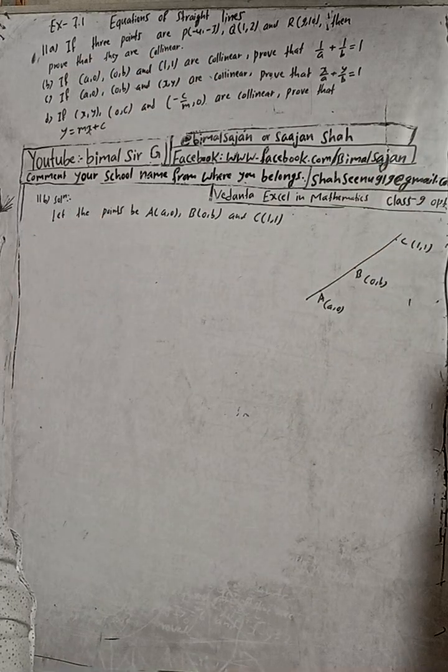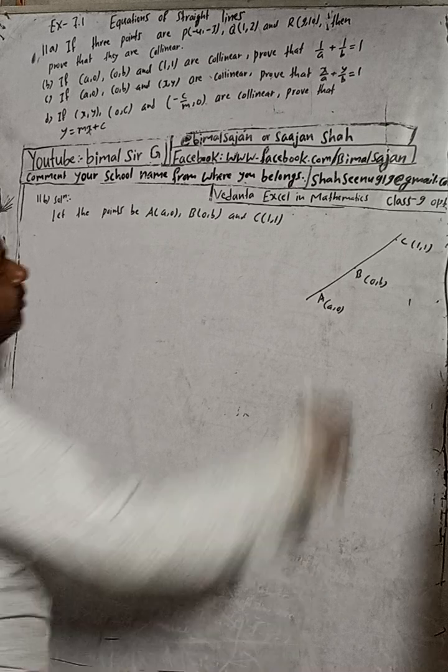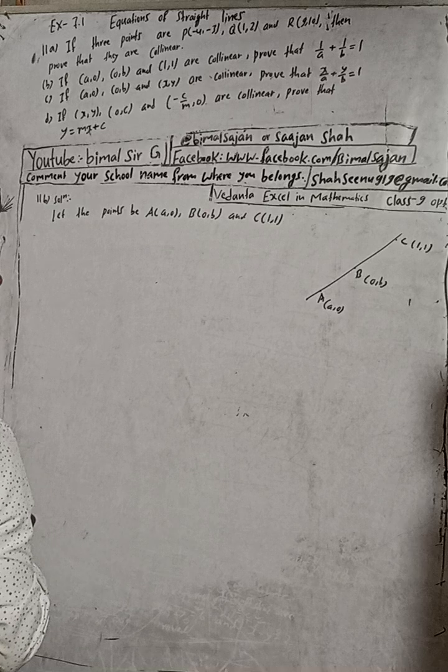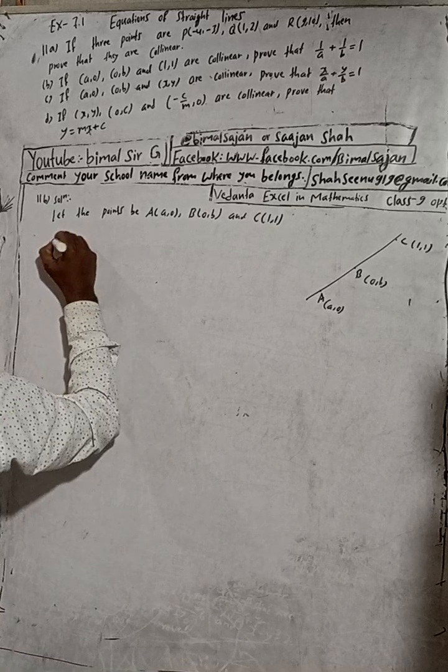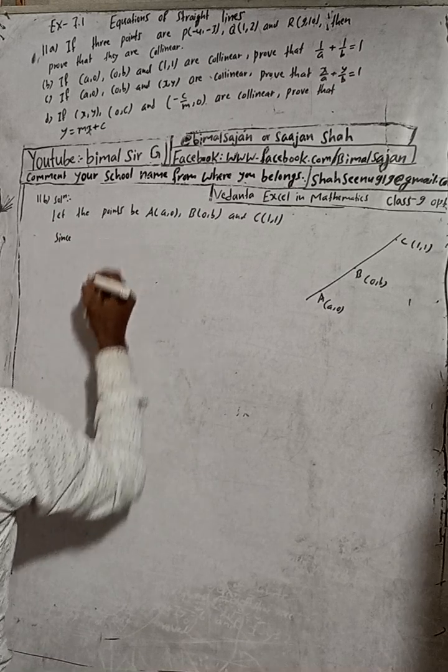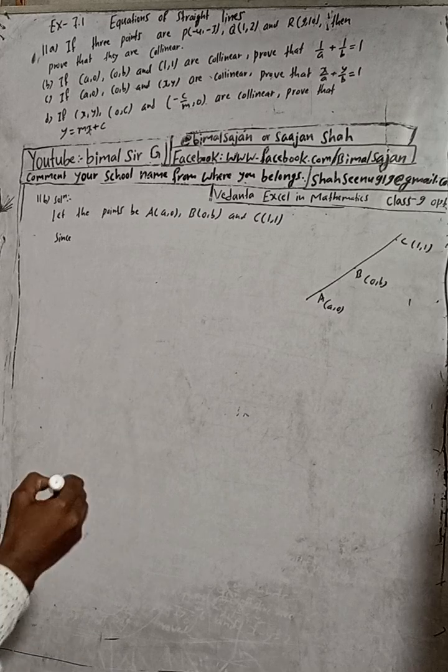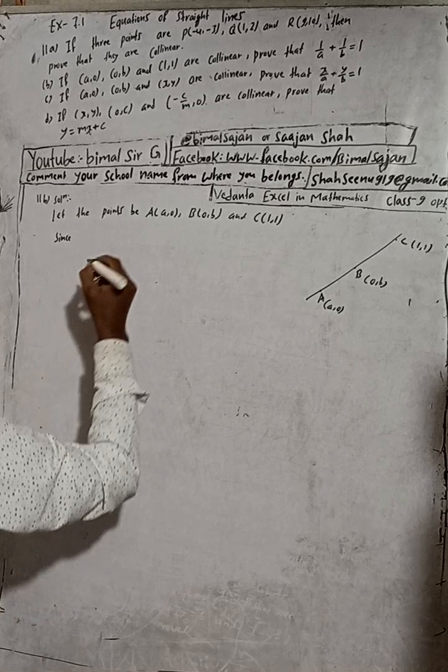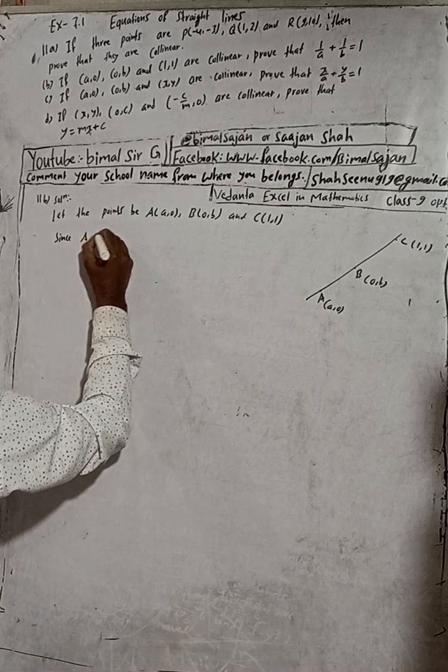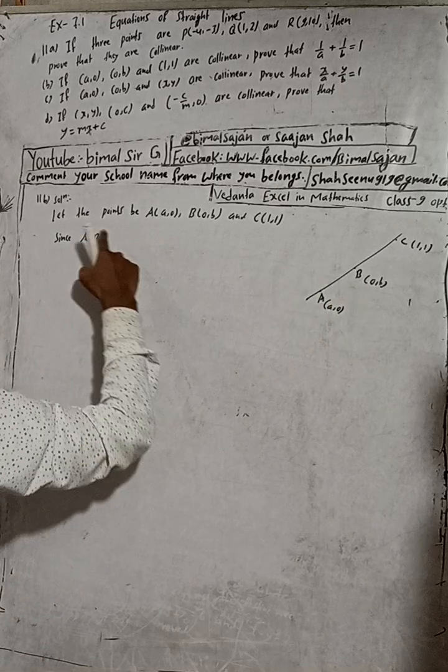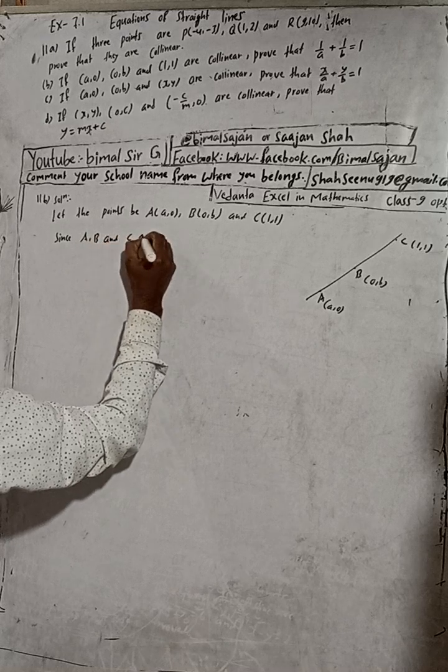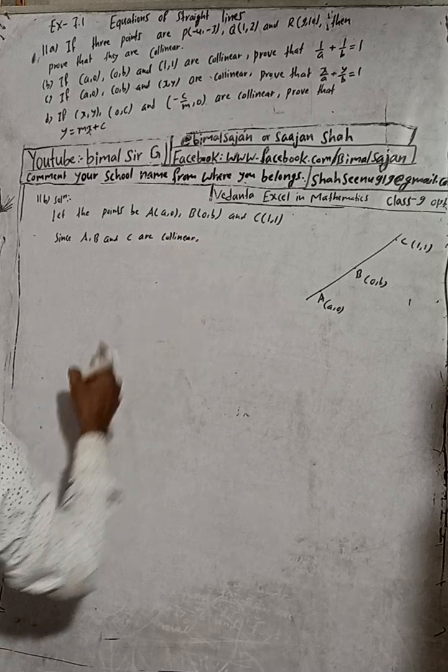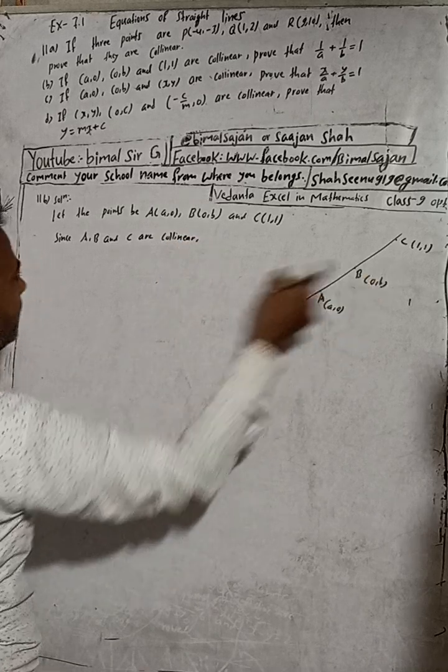Then we have to prove that 1/a + 1/b = 1. So now, since all points are collinear, or we can say since A, B, and C are collinear.